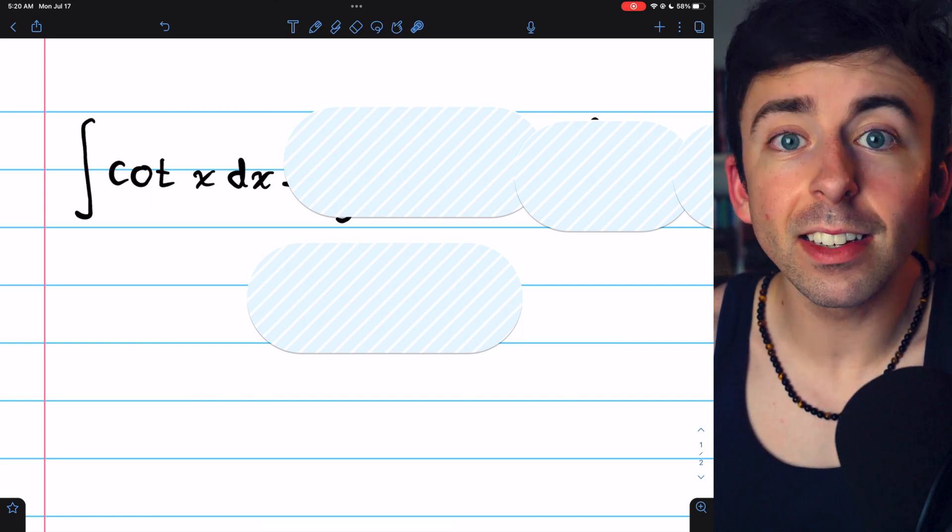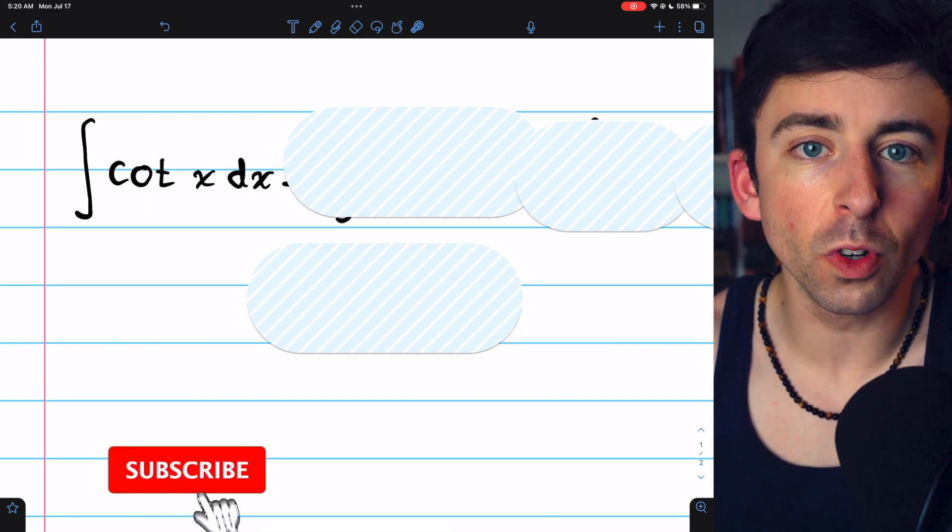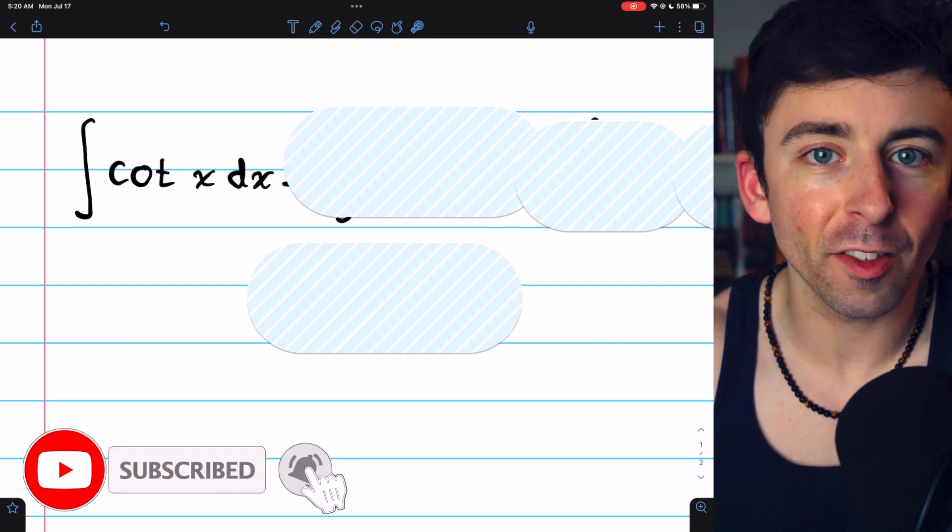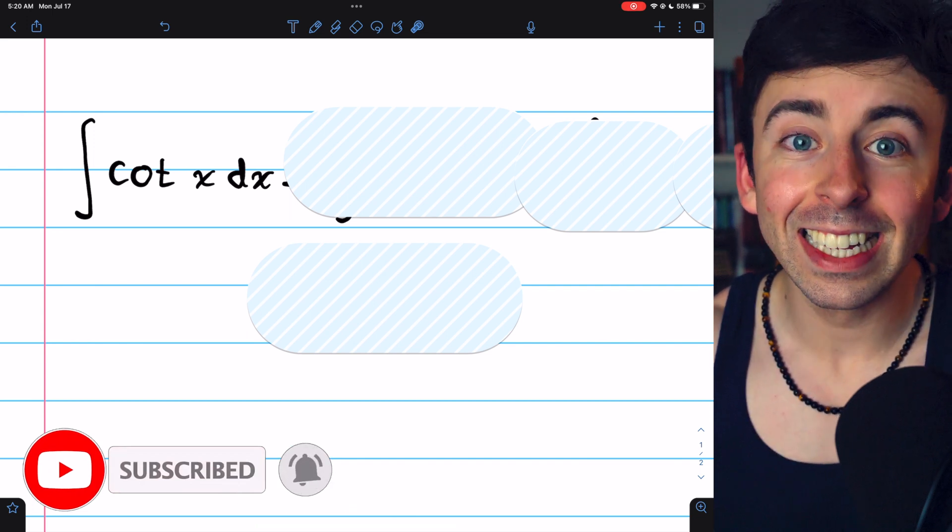The integral of cotangent x is a very basic u substitution problem, so give it a try yourself before watching the solution. Let's get into it.